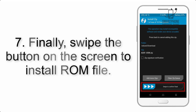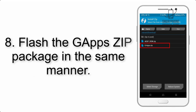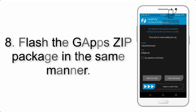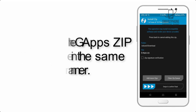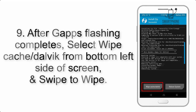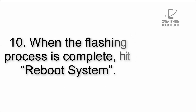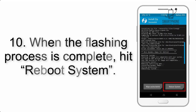Step 7: Swipe the button on the screen to install the ROM file. Step 8: Flash the GApps zip package in the same manner. Step 9: After GApps flashing completes, select Wipe Cache and Dalvik from the bottom left side of the screen and swipe to wipe.